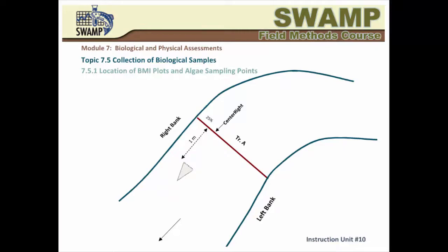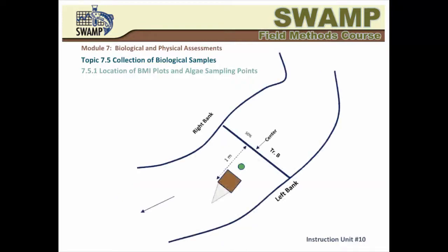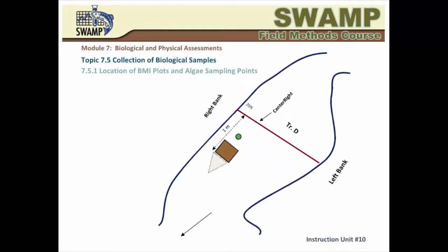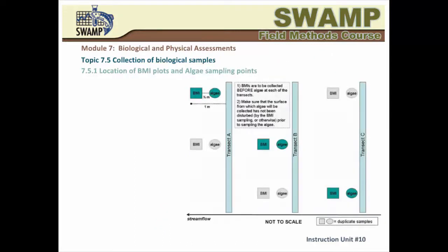The D-Net will be placed at this position, one meter downstream of transect A, and you will collect the BMI subsample from the one square foot plot just above the net. The algae subsample will be collected later at the same center-right position, about 25 cm upstream of the center of the BMI plot. When you move to transect B, you will sample the plots at the center of the wetted channel. In transect C, the sampling plots are at the center-left position. In transect D, you go back to center-right. In other words, you keep alternating the position of the sampling plots as you go upstream.